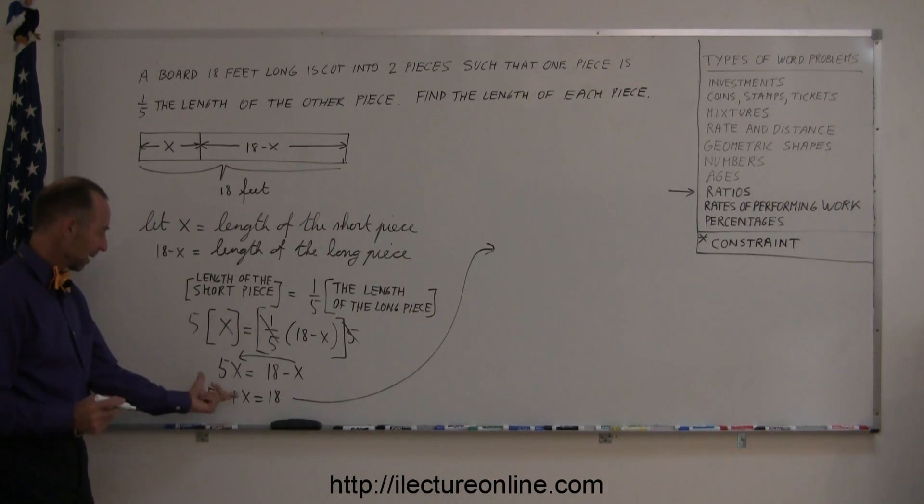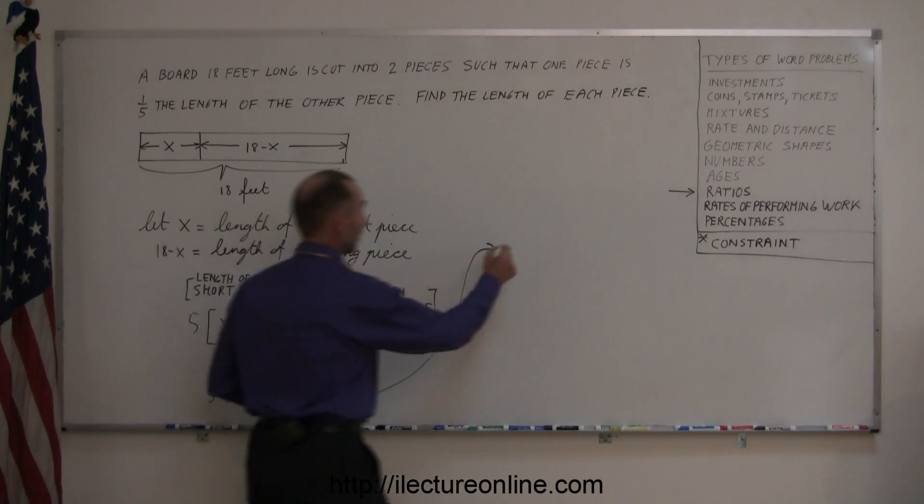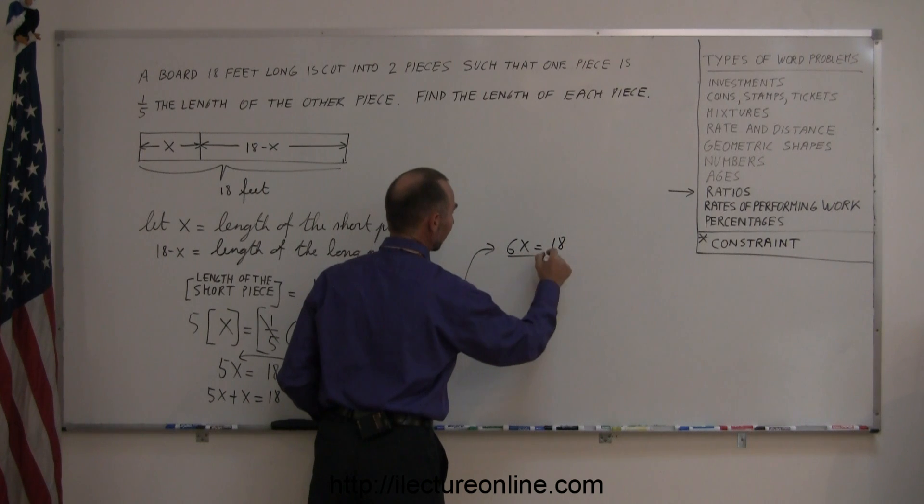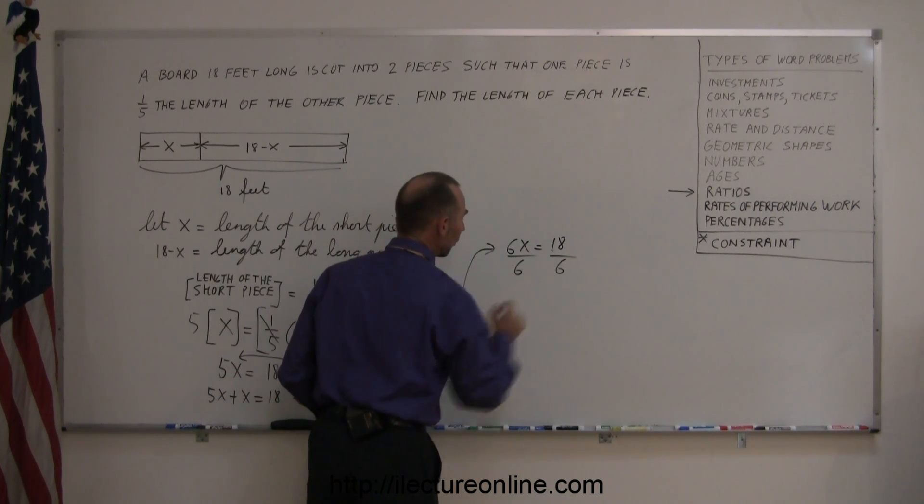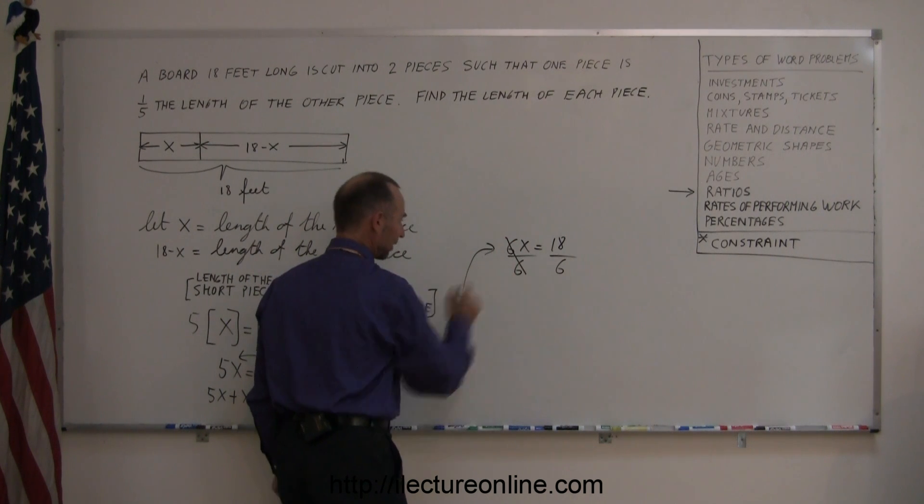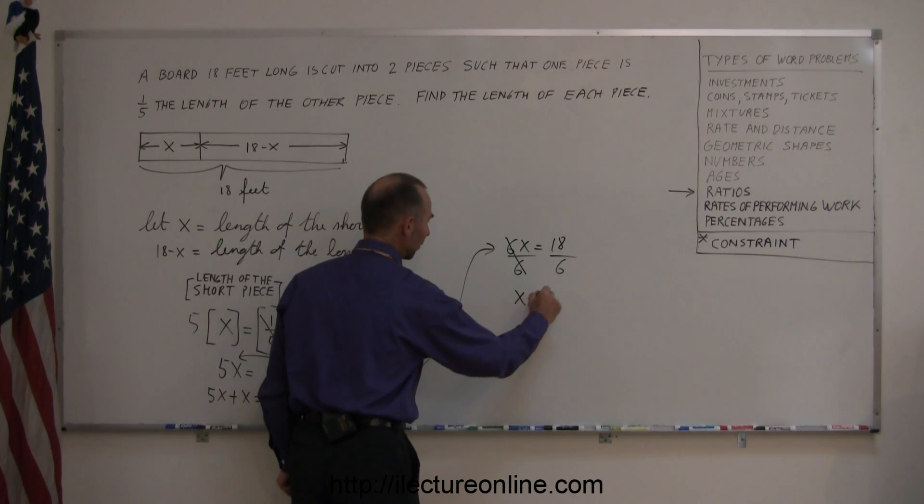So I combine the like terms on both sides, so 5x plus x, that's 6x equals 18 on the right side. And the last thing we do, we divide both sides of the equation by the numerical coefficient in front of x, that cancels out, so we have x equals 3.